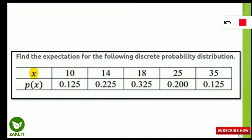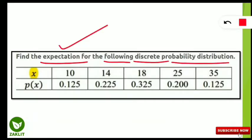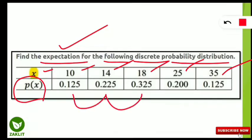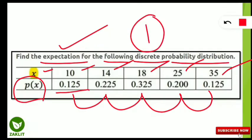The question says: find the expectation for the following discrete probability distribution. Expectation may be a new term for some of you, but it is very easy. The X values given are 10, 14, 18, 25, and 35, and the probabilities for each X are also given. You should note that all the probabilities together must sum to 1. Adding 0.125, 0.225, 0.325, 0.200, and 0.125 gives 1, because the total probability of any sample space is always 1. If a question doesn't satisfy this, it is not a correct question.